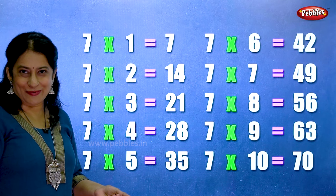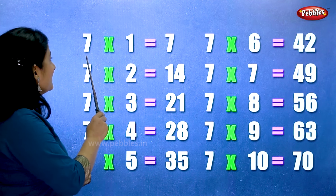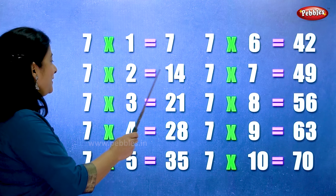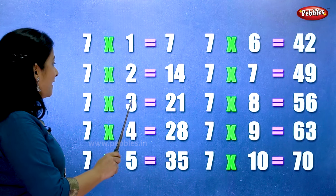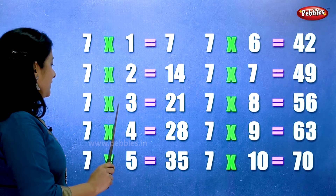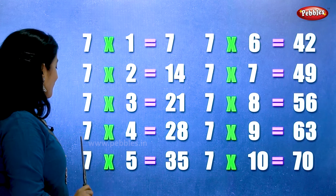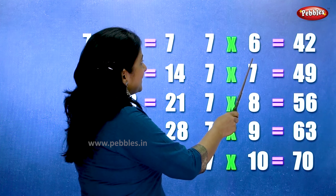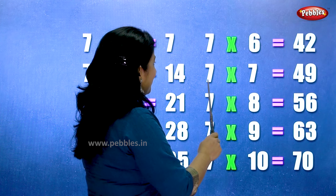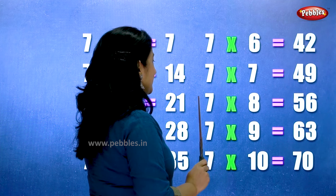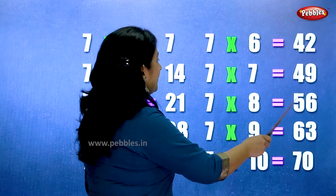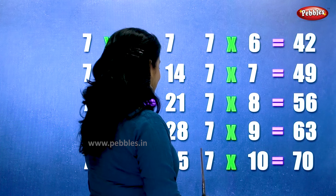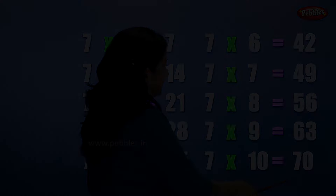Let's learn the table of seven one more time. Seven ones are seven. Seven twos are fourteen. Seven threes are twenty-one. Seven fours are twenty-eight. Seven fives are thirty-five. Seven sixes are forty-two. Seven sevens are forty-nine. Seven eights are fifty-six. Seven nines are sixty-three. Seven tens are seventy.